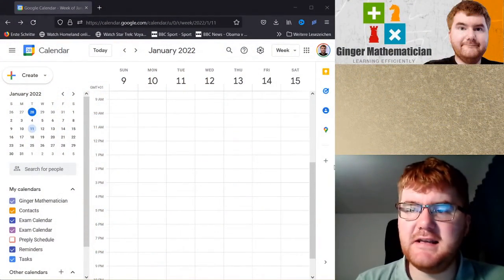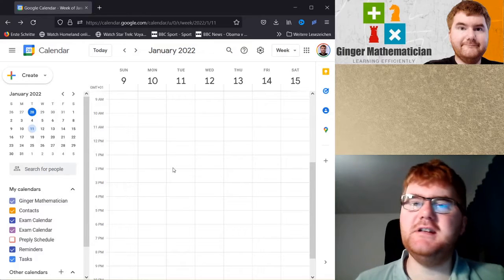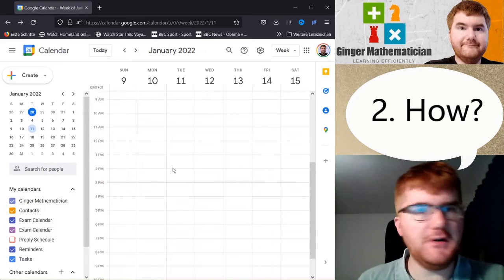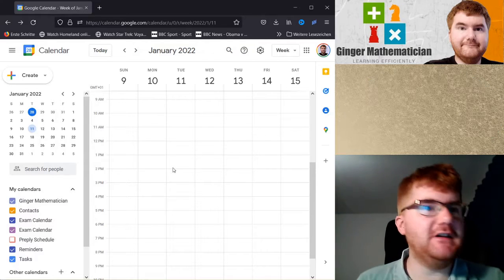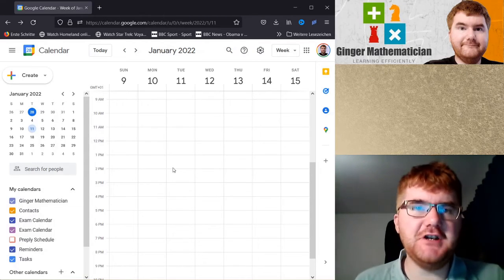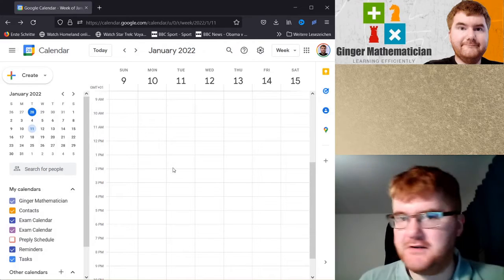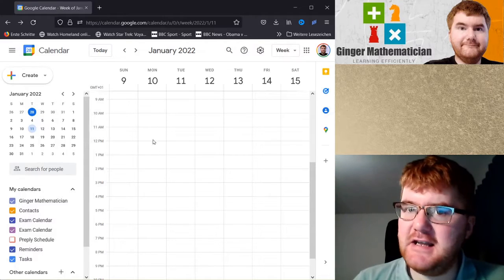So our next step is the how. So then we need to work out how we actually want to organize the revision. And this takes in two steps here. First of all, we're going to look at the logistics of it using Google Calendar. And then we're actually going to go through exactly what you're going to revise. So here's the calendar here.